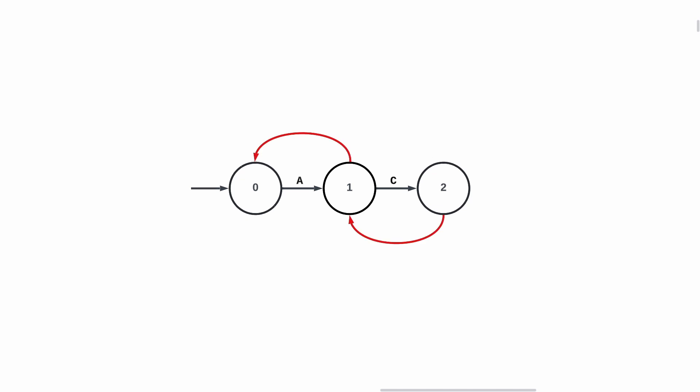If your text matches the pattern, you go to the next state. But if it doesn't, the comparison fails, so you take the failure link. When you follow this transition, you don't consume a character.